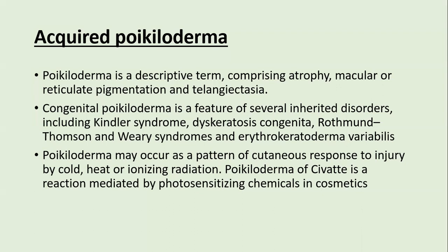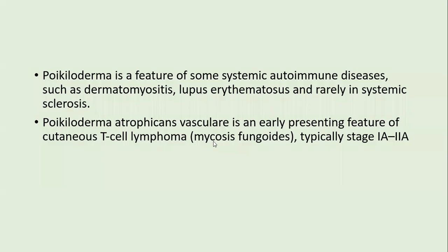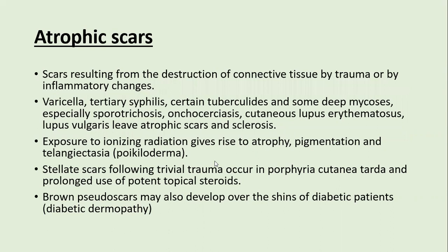Poikiloderma of Civatte is radiation mediated by photosensitizing chemicals in cosmetics. Poikiloderma is also a feature of systemic autoimmune diseases like dermatomyositis, lupus erythematosus, and early SLE. Poikiloderma atrophicans vasculare is the earliest presenting feature of cutaneous T-cell lymphoma, typically stage 1A and 2A.